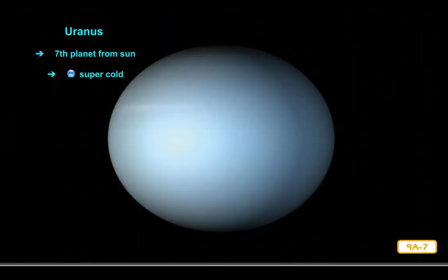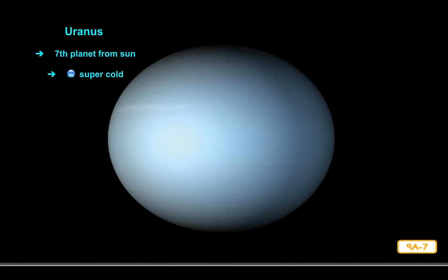The seventh planet, Uranus, has the coldest atmosphere of any planet in the solar system. Its cold atmosphere makes Uranus unique. Because it is so far from the Sun, it takes Uranus 84 Earth years to make one complete orbit.